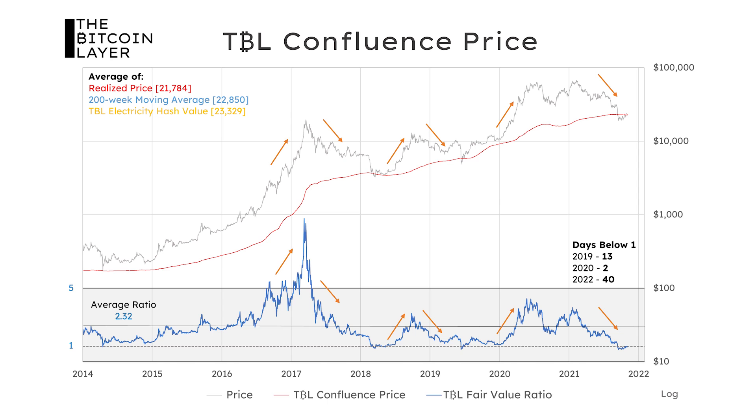We talked about how few days Bitcoin actually spends below its confluence price. But look at what happens when Bitcoin does come back to a fair valuation ratio of one — each time it returns to one, Bitcoin starts another bull market. When Bitcoin comes back down to its fair valuation metrics, the momentum behind Bitcoin buying really starts to gain again. At very high levels of this ratio, we're seeing market exhaustion and a lot of leverage coming in. When the ratios come back down, that's a sign that the leverage and fluff in the market is finally gone.